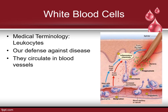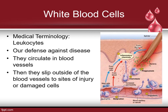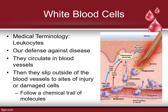Leukocytes are our defense against disease — they circulate in blood vessels and then slip outside the blood vessels to sites of injury or damaged cells. They follow a chemical trail of molecules to attack anything that is foreign and make sure our immune system is kicking in, keeping our blood and the rest of our body healthy.